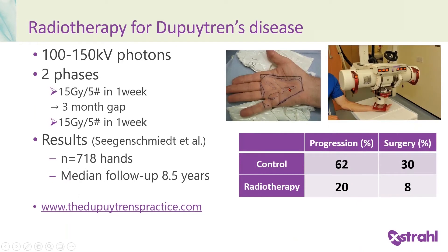The cords, nodules and field are marked on the patient's hand, which is then treated with an appropriate lead shield. We tend to use 100 to 150 kV photons in two phases: the first phase is 15 Gy in five fractions over one week, then approximately a three-month gap, then a further 15 Gy in five fractions over one week. Results from Seegenschmidt et al., treating 718 hands with a median follow-up of 8.5 years, show radiotherapy reduces the chance of progression from 62% to 20%, and the chance of needing surgery for contracture from 30% to 8%.